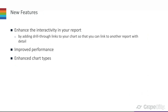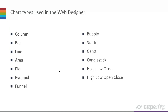New features of the enhanced charts include: the ability to add drill-through links so you can link to another report or report item; improved performance where chart elements update during design time so you can see your changes without switching between design and run time; and new chart types added to the control. In addition to common types like column, bar, line, area, pie, pyramid, and funnel, new types include bubble, scatter, mat, candlestick, high-low-close, and high-low-open-close.